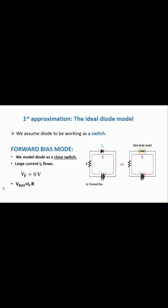With Vf equal to zero, a simple KVL equation gives us the forward current. If V_bias is the battery voltage, the equation is: V_bias = I_f × R, where I_f is the forward current and R is the resistance in the circuit.